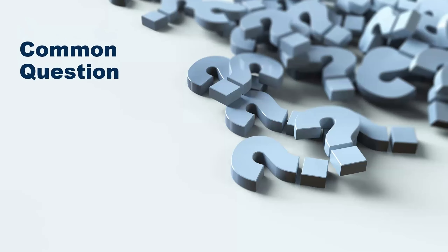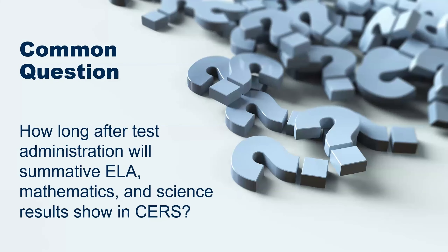There is a common question about summative assessment results: how long after test administration will summative ELA, mathematics, and science results show in CERS? The answer has two parts. The Smarter Balanced summative assessments for ELA and math and the California Science Test are usually released in late May, and the results for the California Spanish Assessments and the California Alternate Assessments for ELA, math, and science are usually available in September due to post-equating.